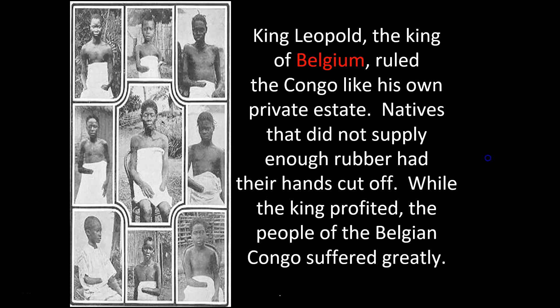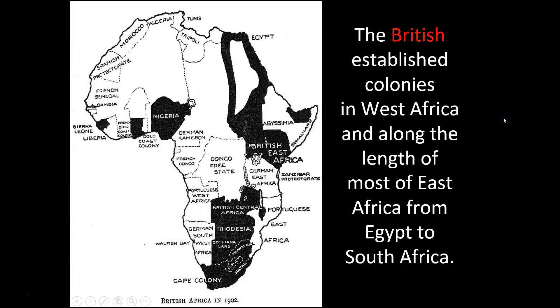This image shows the cruelty and how barbaric European imperialism could be. Some of these are small children — just kids — and their hands are cut off. Because if they didn't supply enough rubber to the Belgians, to make an example of them, they cut off their hands. You could argue they can't get rubber anymore with one hand, but it's just to scare others. The fact that you could cut a child's hand off is a level of cruelty that boggles my mind. The scramble for Africa was terrible for the Africans.